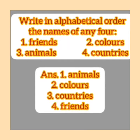And which one is left? Friends. Then we write friends last. These are the sequence in alphabetical order: animals, colors, countries, friends.